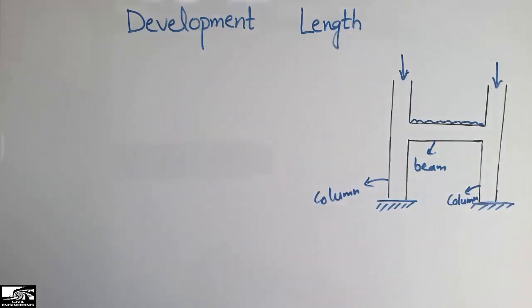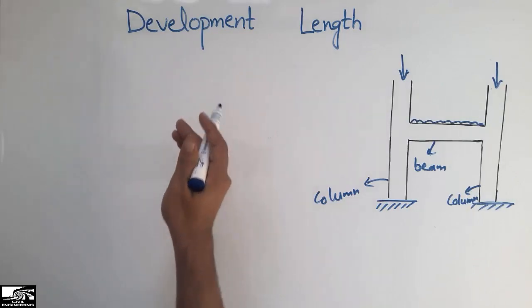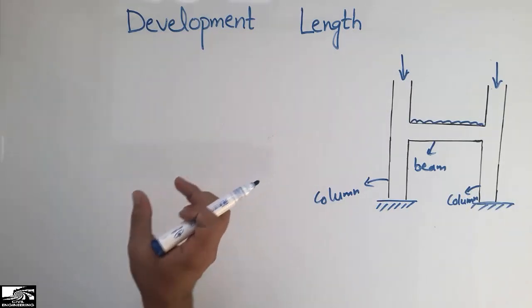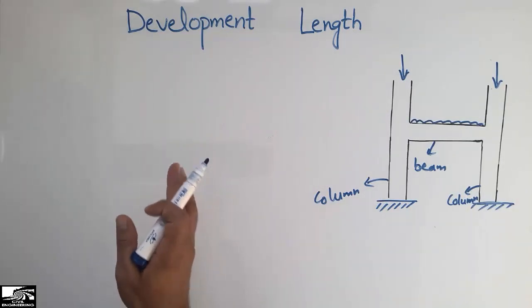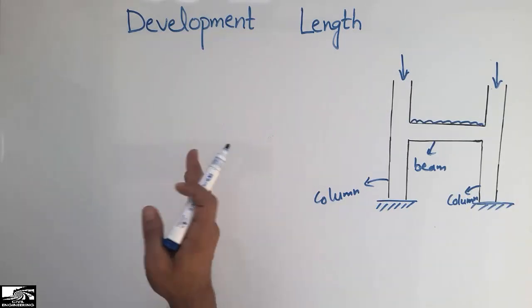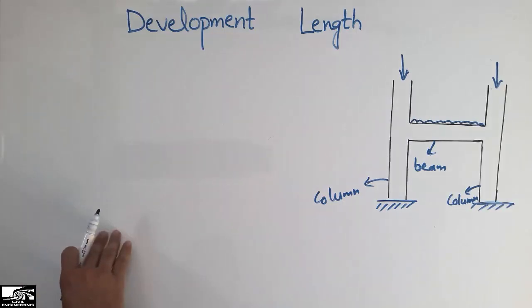The development length can be defined as the length of the steel bar which is required to transfer the load from one structural member to another structural member.